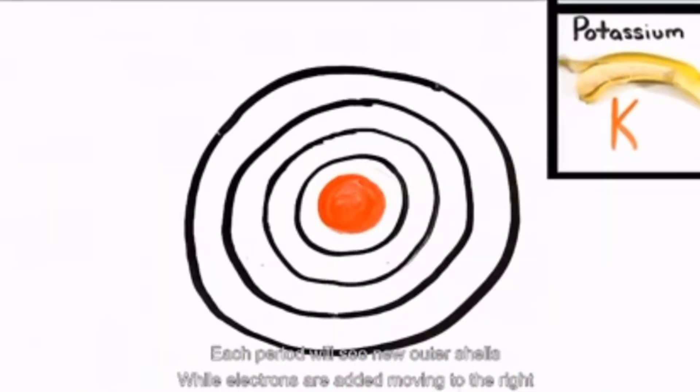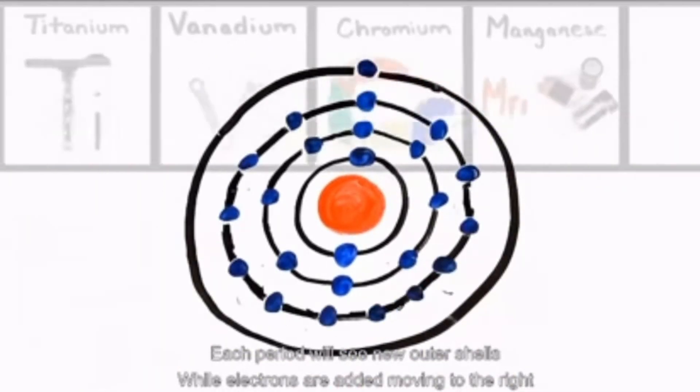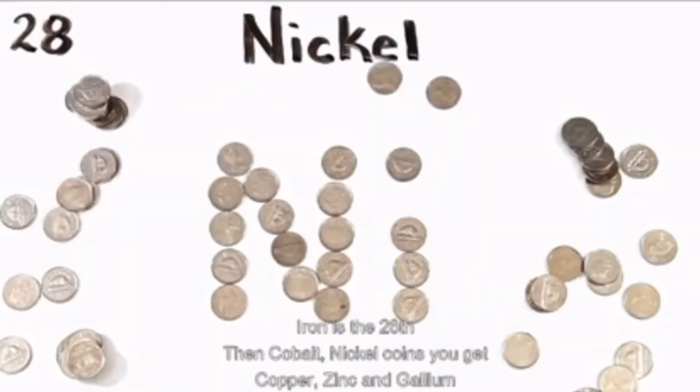Each period we'll see new outer shells while electrons are added moving to the right. Iron is the 26th, then cobalt, nickel coins you get.